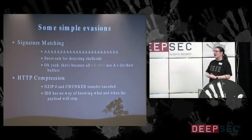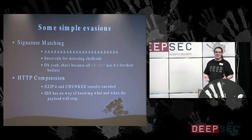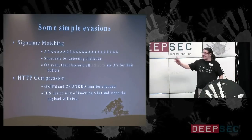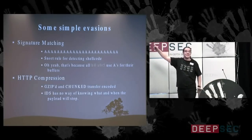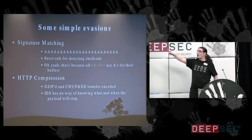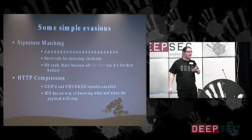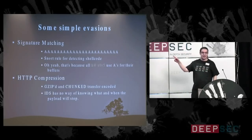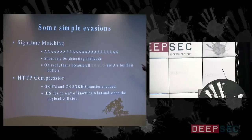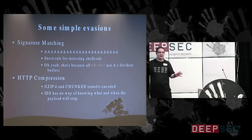We see this quite a lot, and even simple evasions still work now. This is a rule in Snort — has anyone ever seen this rule before? Do you know this is the third revision? Why would you have a rule that looks like that? This rule looks for traffic that has all these A's in it and flags it as shellcode.